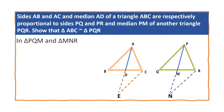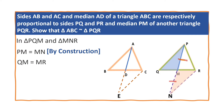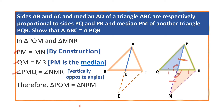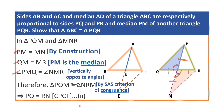In triangles PQM and MNR: PM is equal to MN by construction; QM is equal to MR since PM is the median; and angle PMQ is equal to angle NMR as vertically opposite angles. Therefore, by the SAS criterion of congruence, triangle PQM is congruent to triangle NRM. This implies PQ is equal to RN by corresponding parts of congruent triangles.